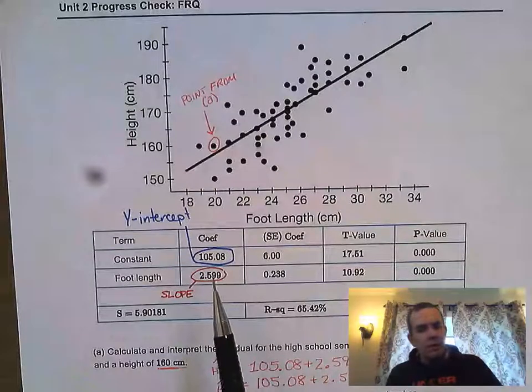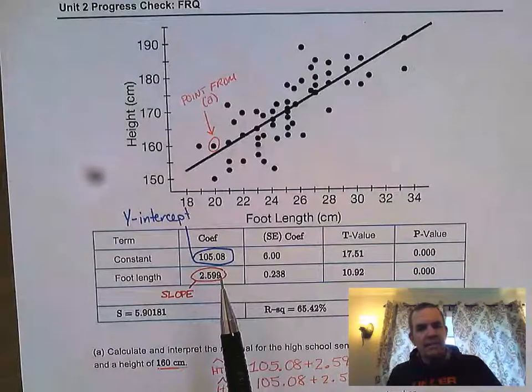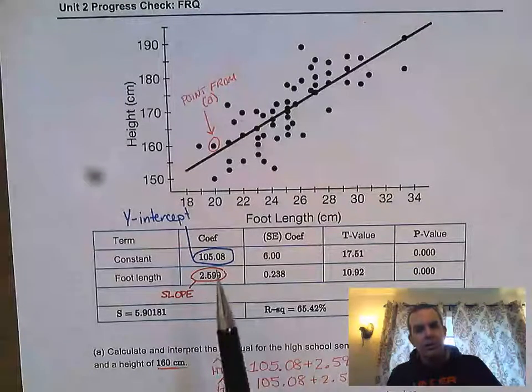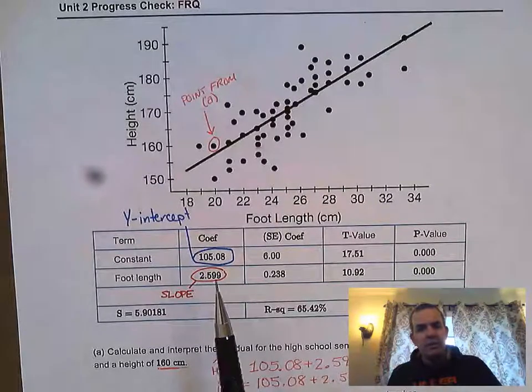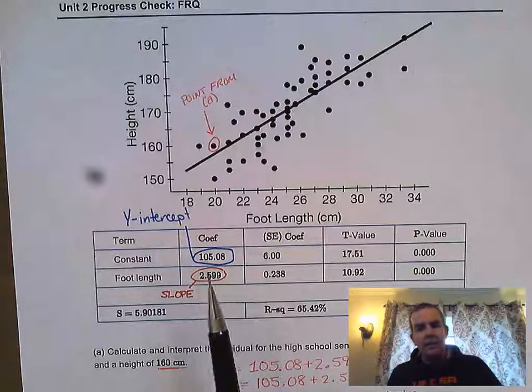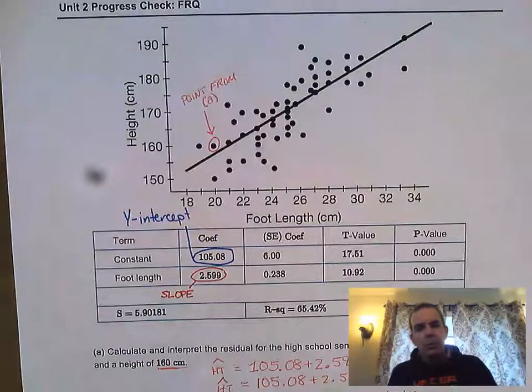The foot length coefficient of 2.599 says for every time we increase someone's foot length by one centimeter, their predicted height will increase by 2.599. Notice I said predicted height—that's the important part.